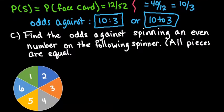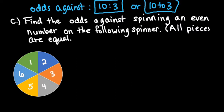Let's look at one last situation. For this one, we're finding the odds against spinning an even number on the following spinner. All the pieces are equal. We have 1, 2, 3, 4, 5, 6. We have the numbers 1 through 6, and we're looking for the probability of spinning an even number.